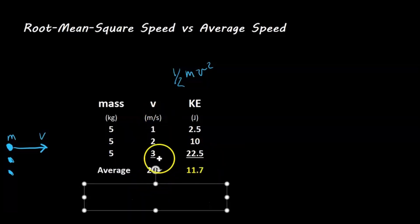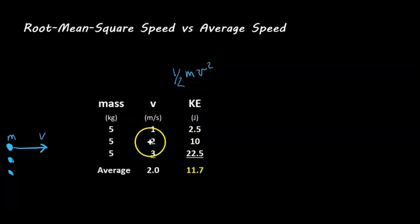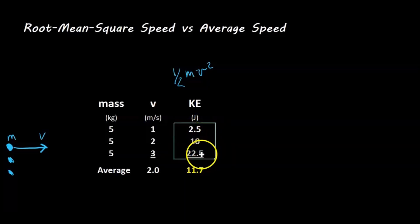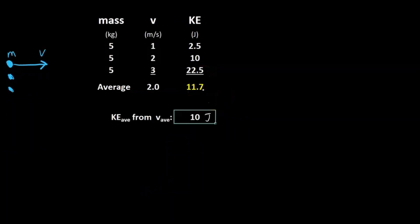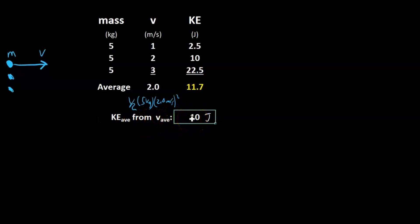We just add them all up and divide by 3. The average speed is 2 — since 1 plus 2 plus 3 divided by 3 is 2. The average kinetic energy is 2.5 plus 10 plus 22.5 divided by 3, which equals 11.7 joules. That's the true average kinetic energy. But if we try to calculate average kinetic energy using the average speed — one-half times 5 times 2 squared — we only get 10 joules. That's too low; it does not give us the true average kinetic energy.